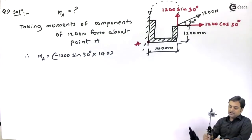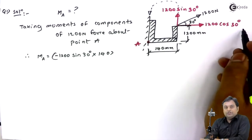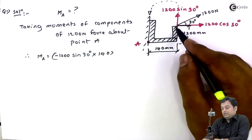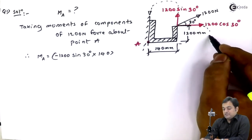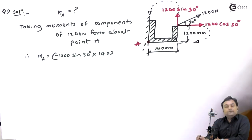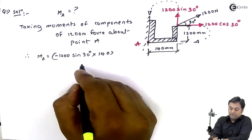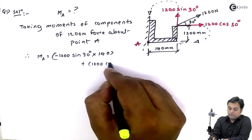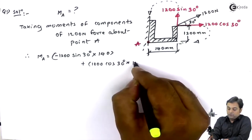Next, for the horizontal component 1200 cos 30°, taking its moment about point A, it acts at a perpendicular distance of 1200 mm and produces a clockwise moment. So this contributes +1200 cos 30° × 1200 to the moment at A.